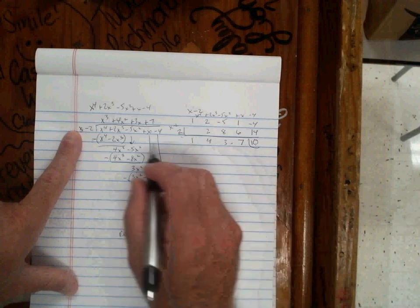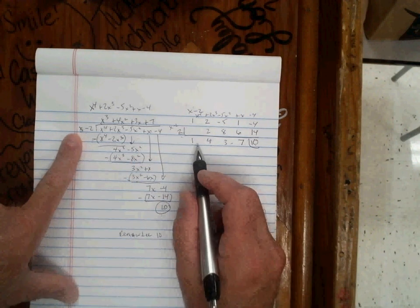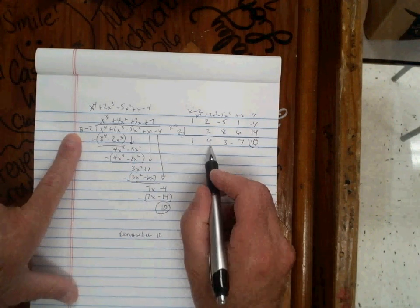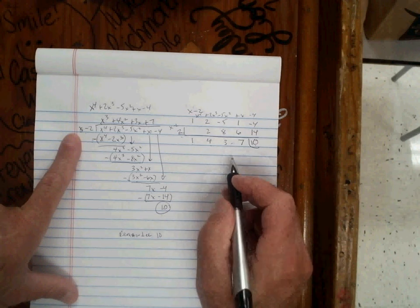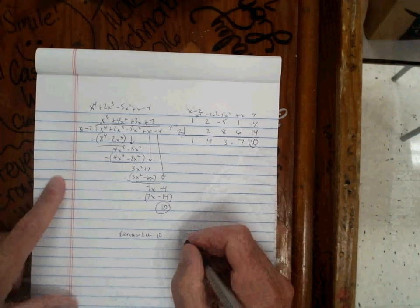These are the coefficients of the quotient, what we've got over here. So this would represent x cubed plus 4x squared plus 3x plus 7. And my remainder is 10.